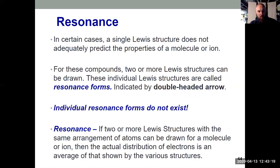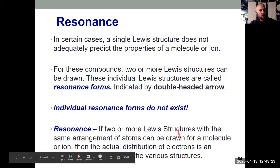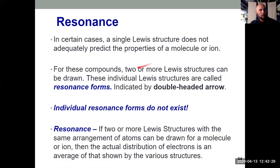So when we have that situation, one Lewis structure isn't cutting it, we have to draw two or sometimes more, three, four, up to six Lewis structures that describe the distribution of the electrons. And those are called resonance forms.